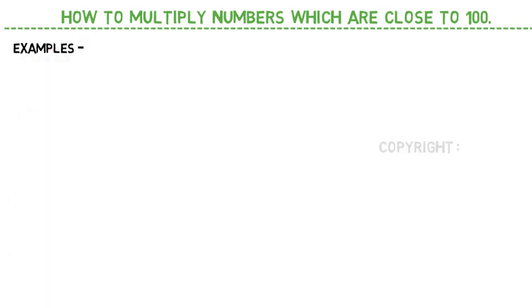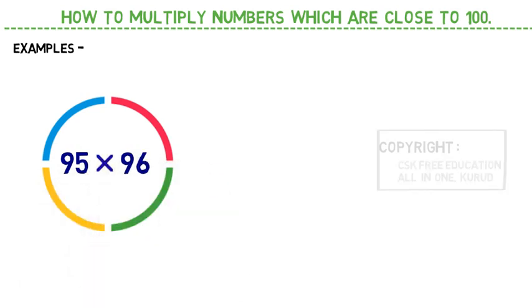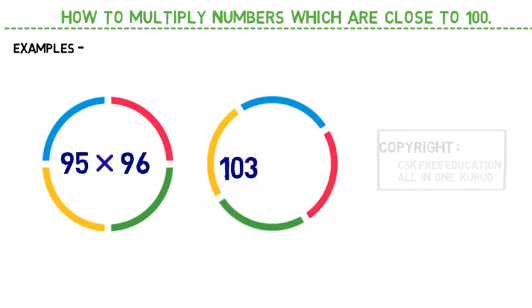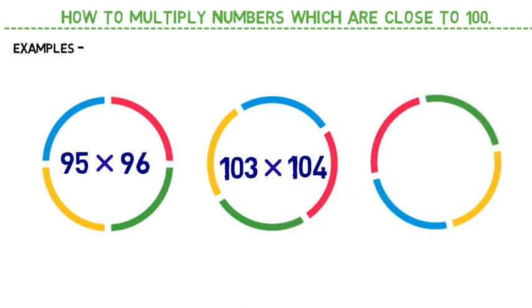Let's take an example, 95 × 96. These two numbers are close to 100. In the same way we can take the greater number as well, let's say 103 and 104. Let me write down one more question, let's say 97 × 94.